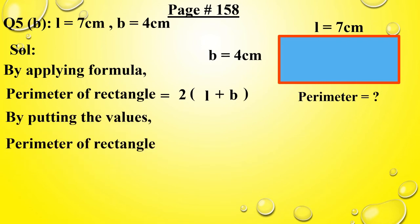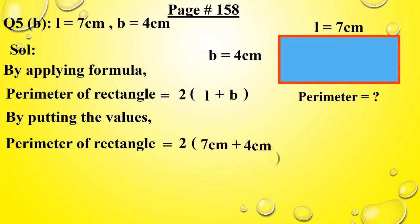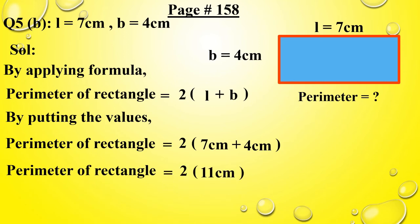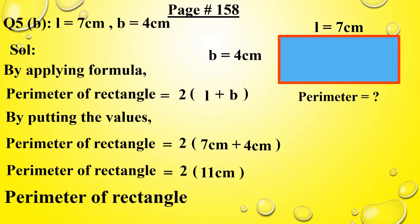Now we will put the values. Perimeter of rectangle equals to 2 into (7 cm plus 4 cm). As you know that we always solve the bracket first. Perimeter of rectangle equals to 2 into 11 cm. Perimeter of rectangle equals to 22 cm.